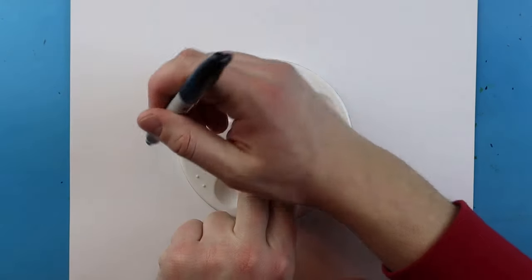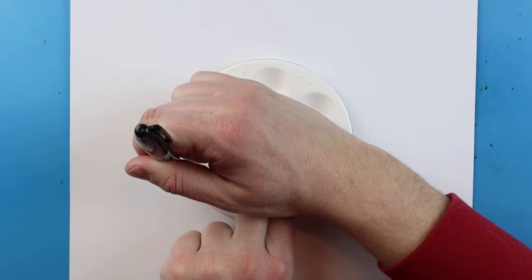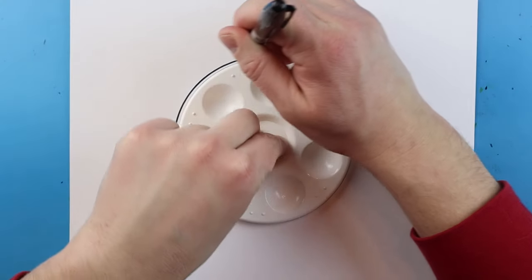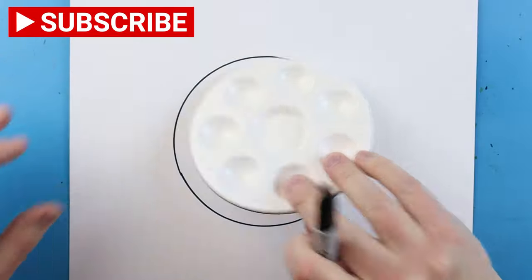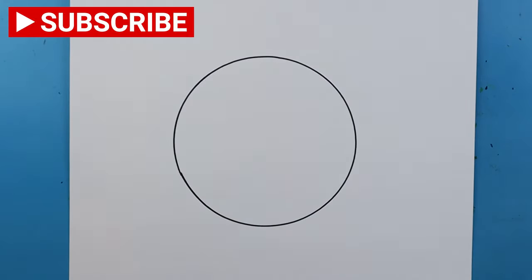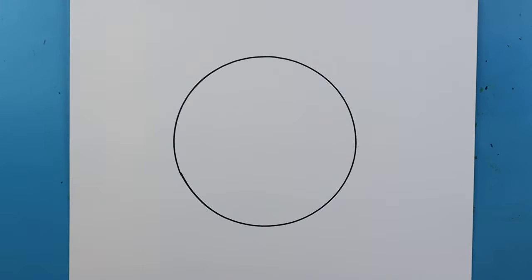Now I'm going to take my marker and I want it straight up and down and I'm just going to trace all the way around here, so I have a nice circle shape.